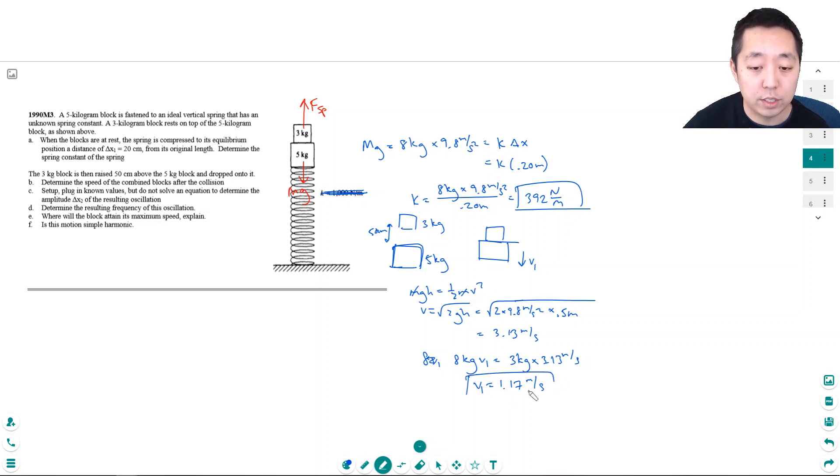So part C: set up, plug in known values, but do not solve an equation to determine the amplitude delta x2 of the resulting oscillation. So now what's going to happen is I have some kinetic energy, and it's going to determine the amplitude, how far is it going to go down. All that kinetic energy and some potential energy is going to get converted into spring compression energy.